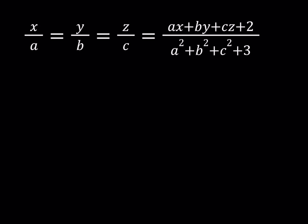Hello everyone. In this video we're going to be solving a ratio problem. We have x over a equals y over b equals z over c, and that equals the expression ax plus by plus cz plus 2, all over a squared plus b squared plus c squared plus 3.